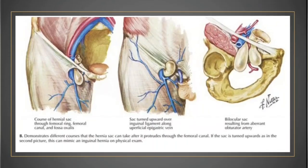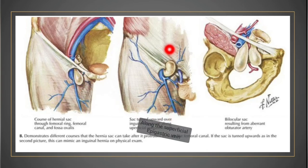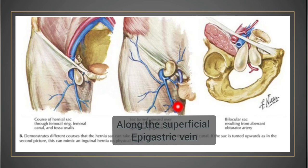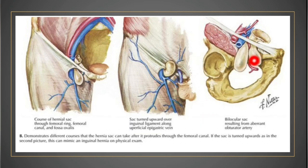These images demonstrate different causes of femoral hernia. In the first image, the course of the hernial sac passes through the femoral ring, femoral canal, and fossa ovalis. Here is the femoral hernia sac. Another image shows a bilocular sac, which occurs because of the obturator artery.